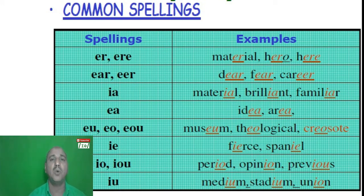Also I-O and I-O-U, as in words like 'period', 'opinion', and 'previous'. And the letters I-U, found in words like 'medium', 'stadium', and 'union'. These are the letter combinations that form the /ɪə/ sound. As we have discussed before, there is a difference between spelling and pronunciation, so you have to be careful — it is not necessary to produce all the letters in a word, as sometimes there are modifications in how sounds are produced.